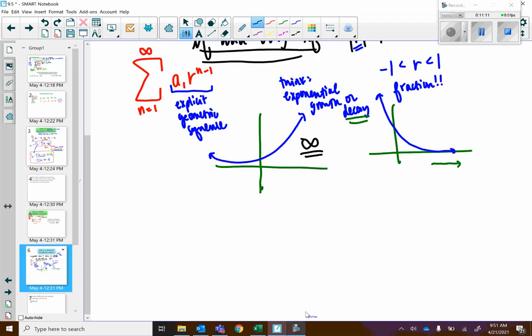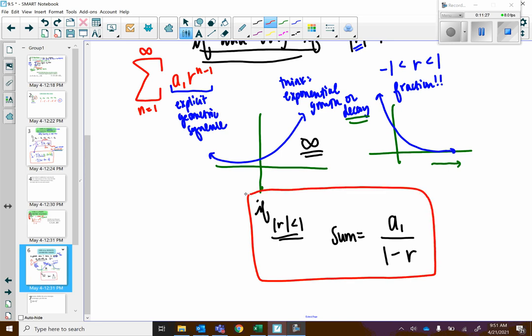If it converges, if the absolute value of r is less than one, then the sum is equal to the first term divided by one minus r. So, again, this is the sum of an infinite geometric series. And it is only true if the absolute value of r is less than one.